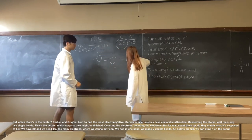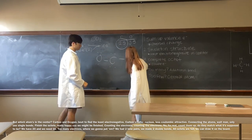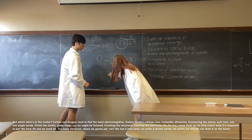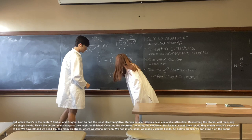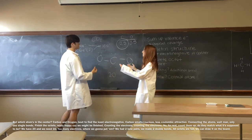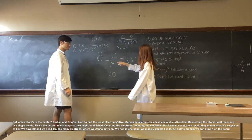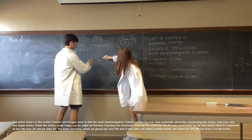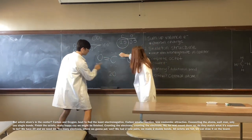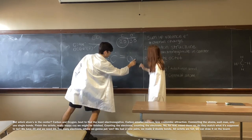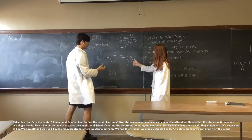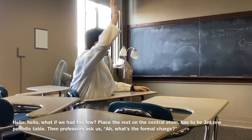For real, count them up. Do the math for what it's supposed to be. Nope — there's 20 and we need 16. Too many electrons? Where we gonna put them? We had two lone pairs, we made two double bonds. All octets are full, we can draw it on the board.